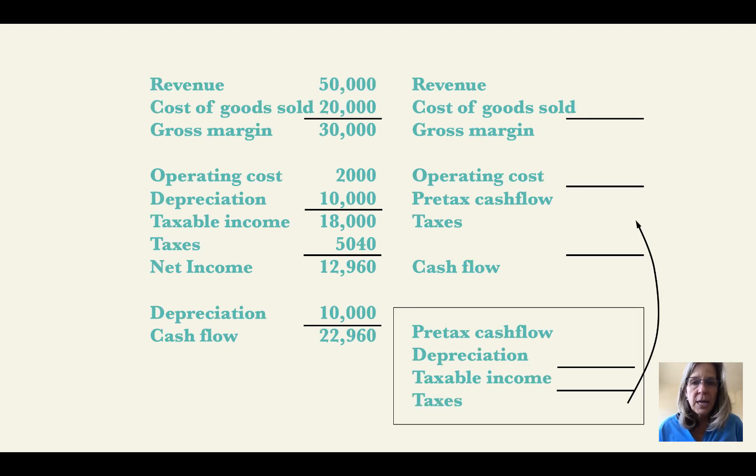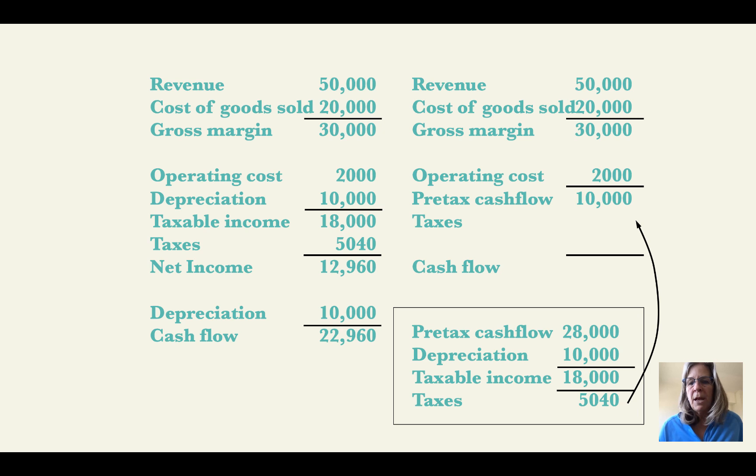So now I actually have my cash flow number. Let's go ahead and look at the parallel calculation here. So what I've done here is I just brought over most of those costs and I'm doing the tax calculations separately, which is going to be the same values, but just a separate calculation. And it's going to get me the same answer, $22,960.